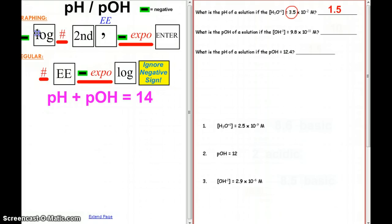If I'm a regular calculator user, then I just have to type it in a little differently. I have to type in the 3.5, then hit the EE or EXP key, depending on your calculator. And then negative 2 log. Now your calculator is going to show a negative 1.45 something. But our pHs are always between 0 and 14, so you just ignore the negative sign.